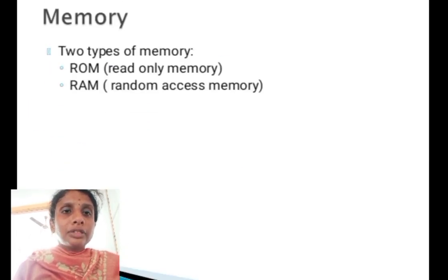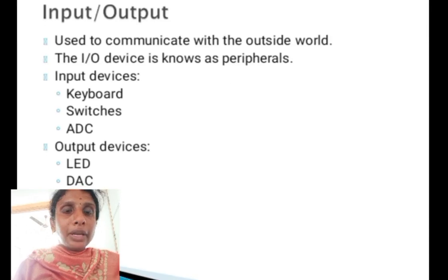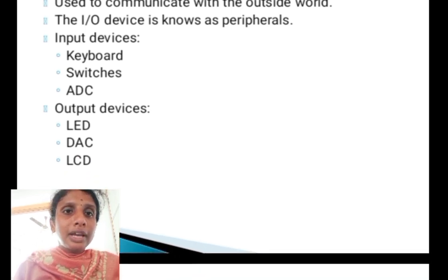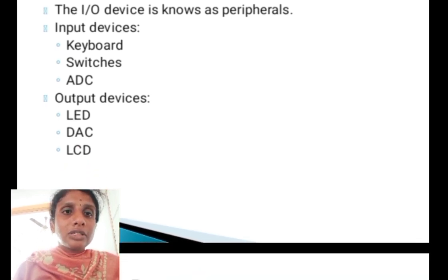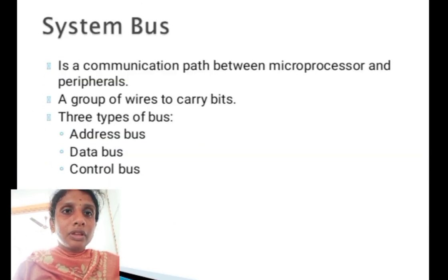There are two types of memory: ROM (Read-Only Memory) and RAM (Random Access Memory). Input and output devices are used to communicate with the outside world and are known as peripherals. Input devices include keyboards, switches, and ADCs; output devices include LEDs, DACs, and LCDs.